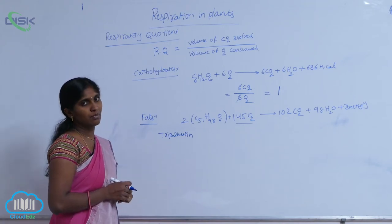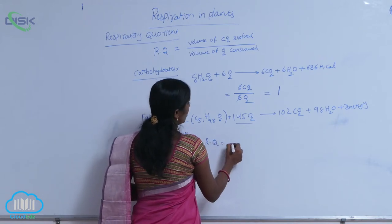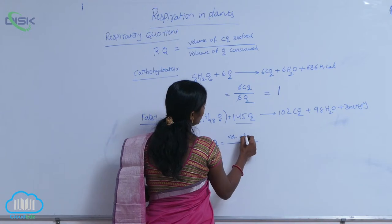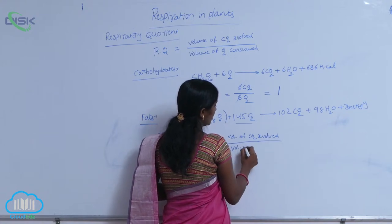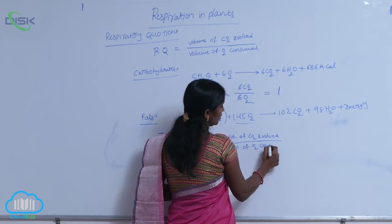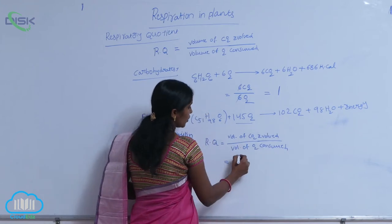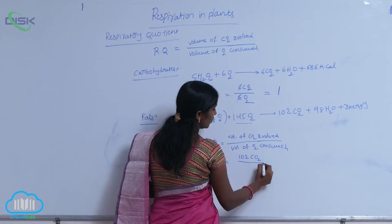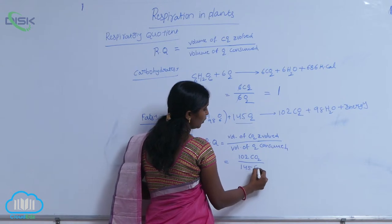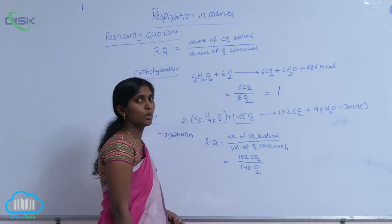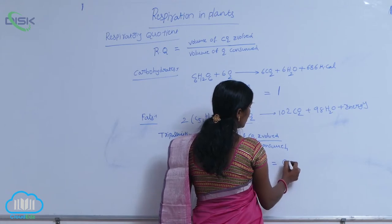You see here, according to the respiratory quotient equation, the RQ is equivalent to volume of CO2 evolved by volume of O2 consumed. How much of CO2 evolved according to equation? 102 CO2 molecules are evolved. And how much of oxygen is consumed? 145 O2 molecules are consumed. That is equivalent to, the ratio is equivalent to 0.7.